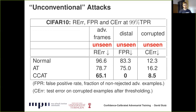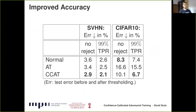In the middle column, we consider distal adversarial examples — computed to maximize confidence on random noise images within a small epsilon ball — which we can perfectly reject with our confidence calibrated adversarial training. In the last column, we show improved performance on corrupted examples on CIFAR-10-C. Finally, confidence calibrated adversarial training also improves accuracy. Especially on CIFAR-10, the improvement is significant both with and without rejection. With thresholding, we obtain a test error of 6.7%, outperforming both normal training and adversarial training.